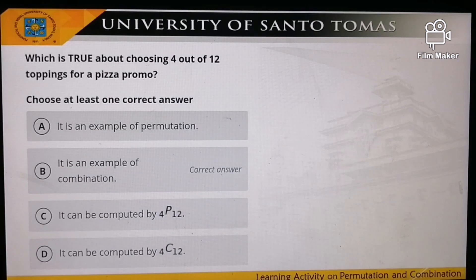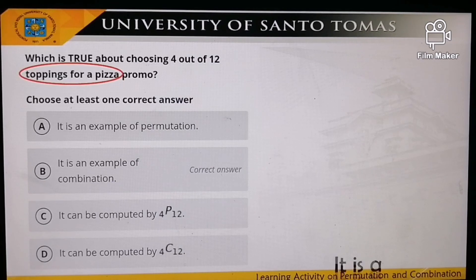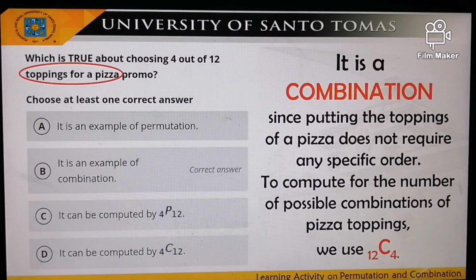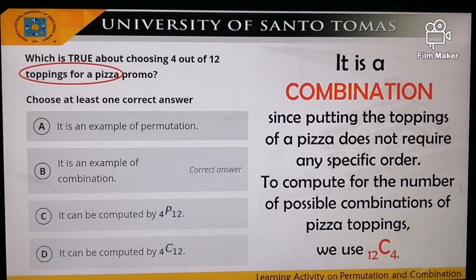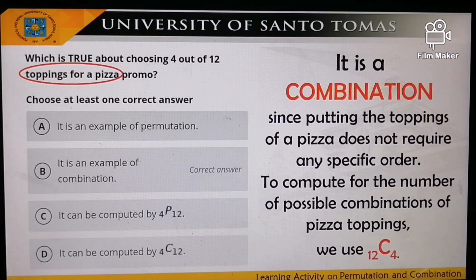To start with, we are asked: which is true about choosing 4 out of 12 toppings for a pizza promo? We're talking about toppings for a pizza — this is a combination, because putting toppings on a pizza does not require any specific order. Regardless of the order you put on the toppings, that indicates we are talking about combination. We use the formula C(12,4), so the correct answer is B.